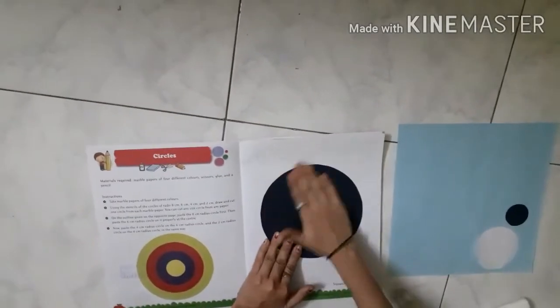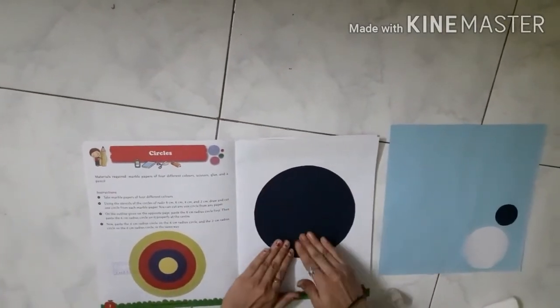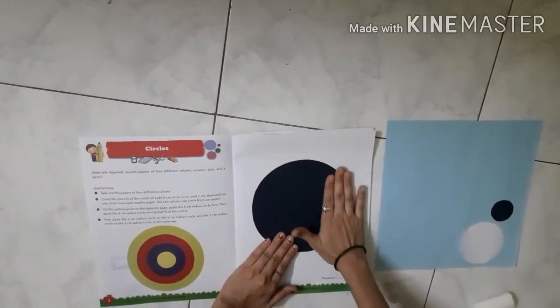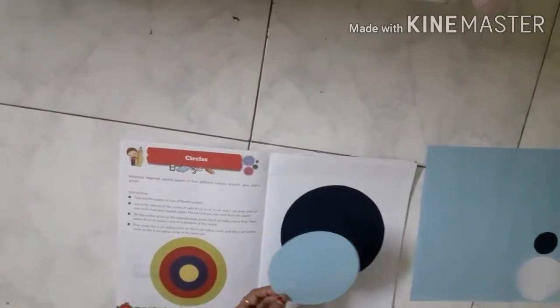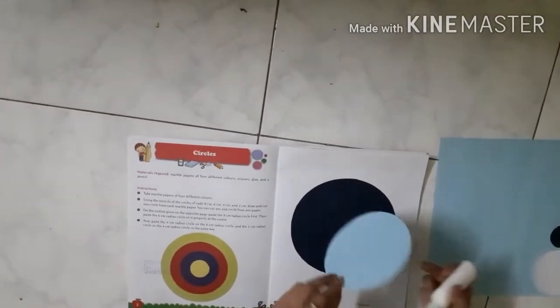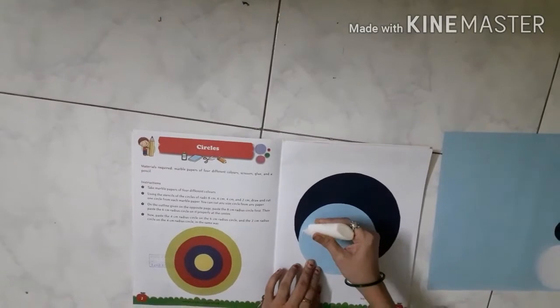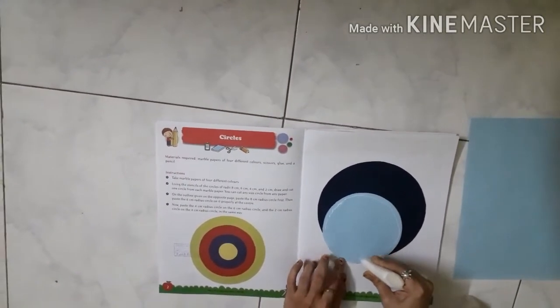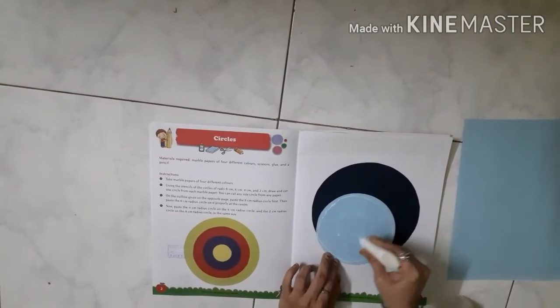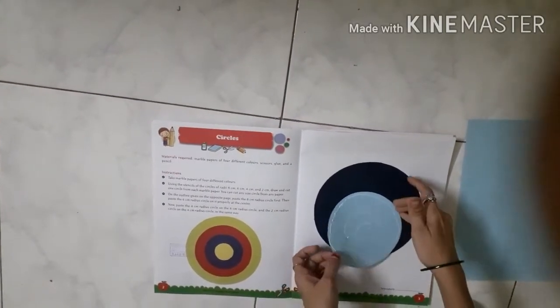After that, take the six centimeter circle. Again use the glue and stick it in the center over the previous circle.